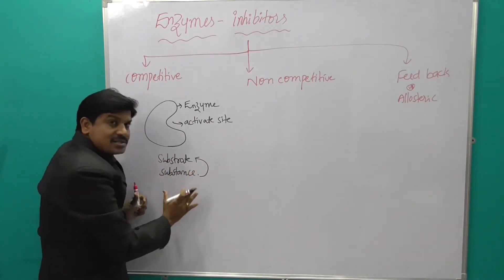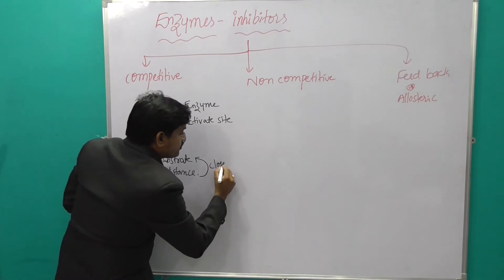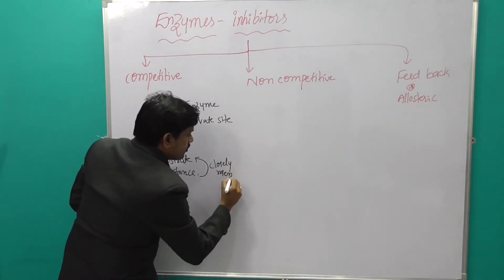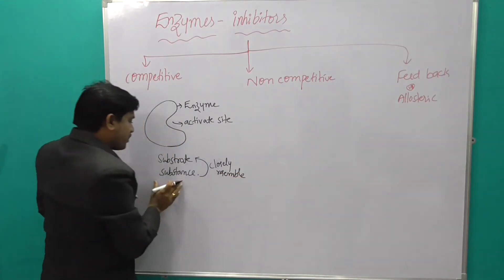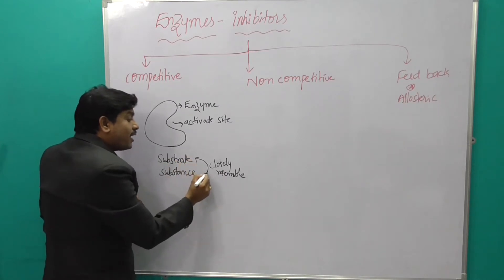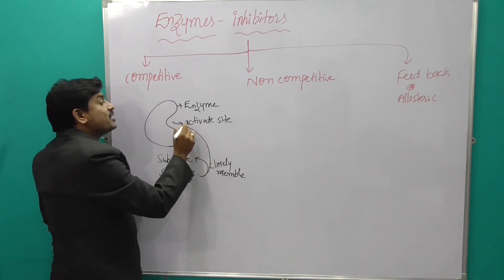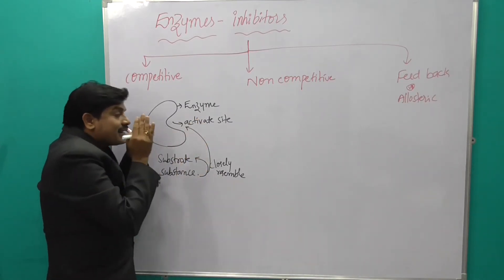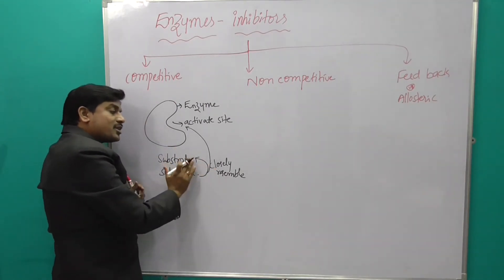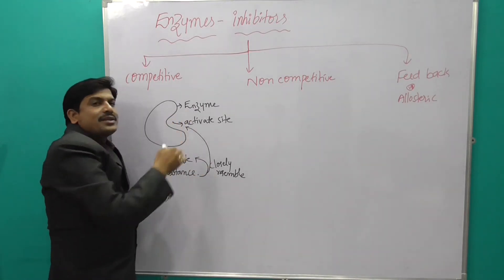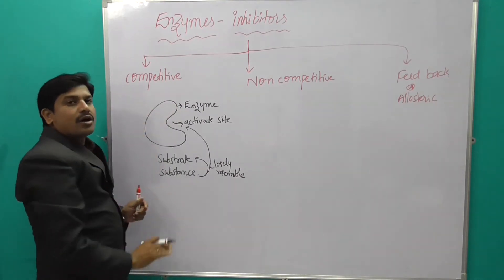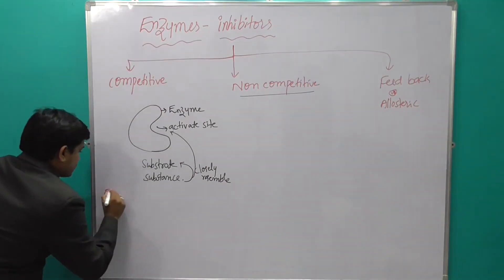The inhibitor substance closely resembles the substrate and binds to the enzyme's active site, thereby inhibiting it. The substance closely resembles the substrate and inhibits the enzyme's active site — this is what we call competitive inhibition.